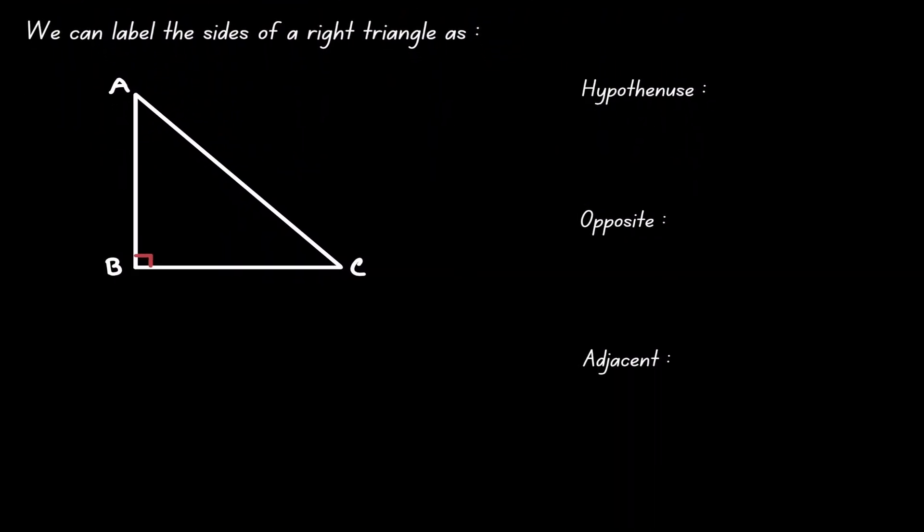When working with right triangles we can label their sides as either being the hypotenuse, the opposite, or the adjacent.